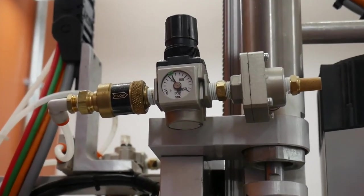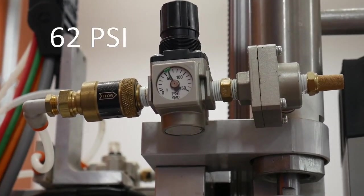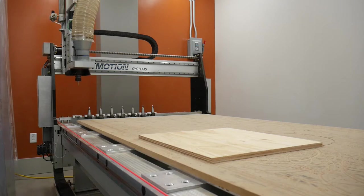You will then be prompted to check the spindle air pressure. The gauge should read 62 PSI. Press Enter if correct. The warm up is complete, and you may now start your job.